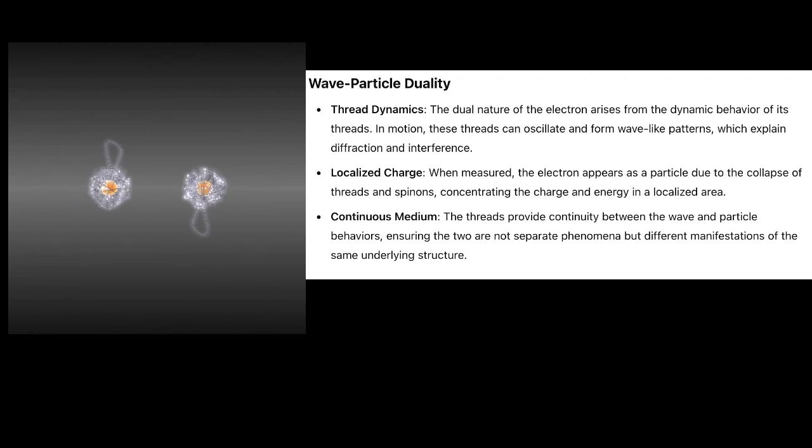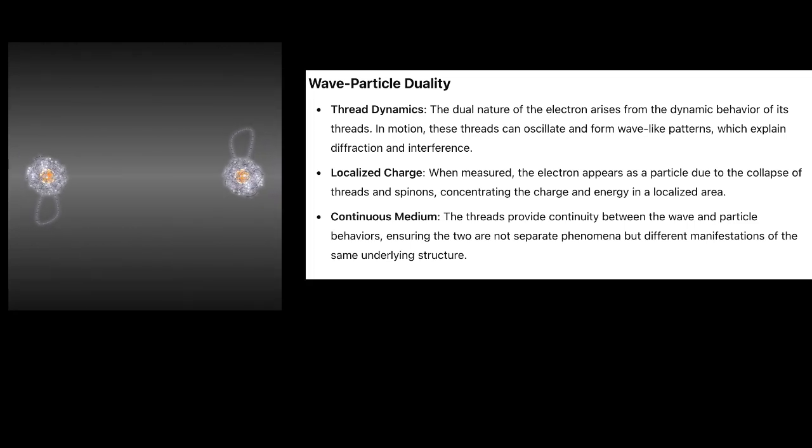Localized Charge: When measured, the electron appears as a particle due to the collapse of threads and spinons, concentrating the charge and energy in a localized area.